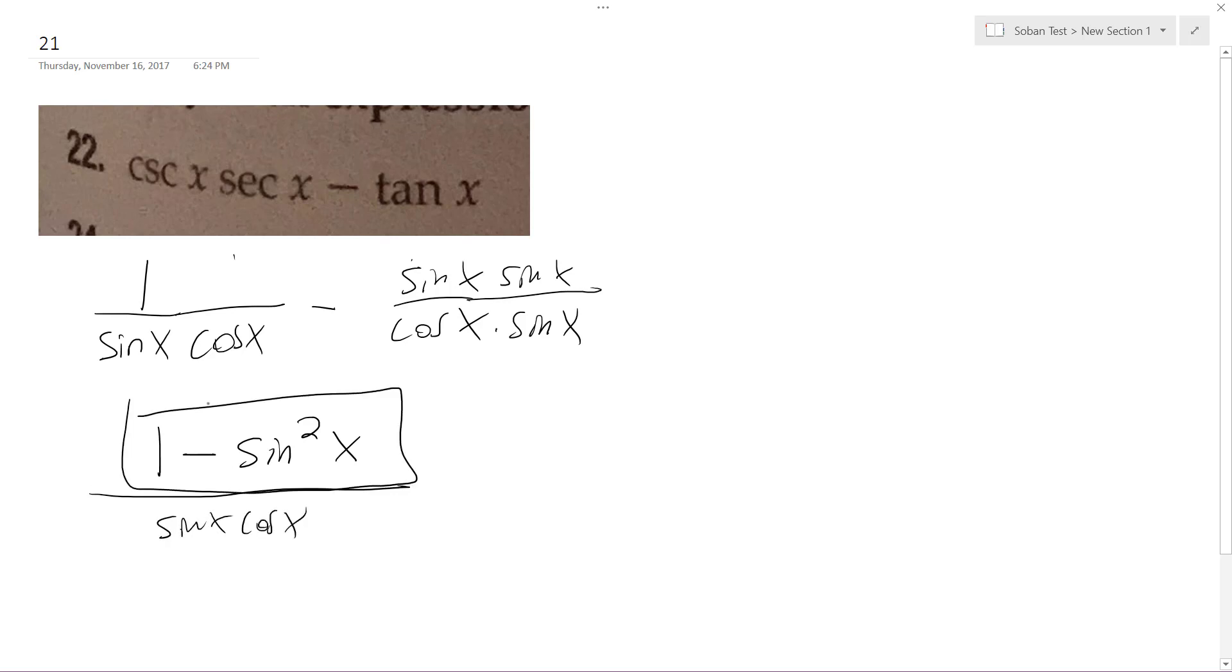And this right here is equal to, trig identity is equal to cosine squared x, because cosine squared x plus sine squared x equals 1, and then 1 minus either one equals that cosine squared x.